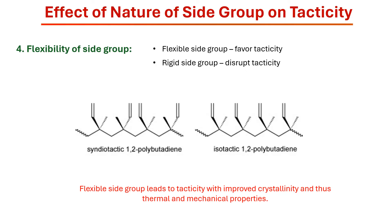Flexibility of side groups also has a significant influence on the tacticity of polymers, as it affects chain mobility, interactions during polymerization, and chain packing in the crystalline phase. It is easier to achieve isotactic and syndiotactic polymers with flexible side groups rather than rigid side groups. Higher flexibility leads to tacticity with improved crystallinity and also better thermal and mechanical properties.